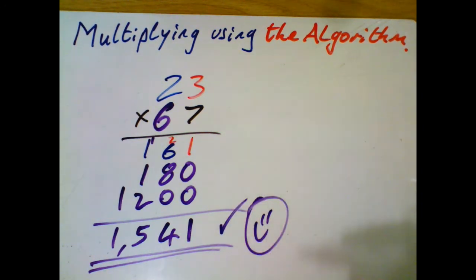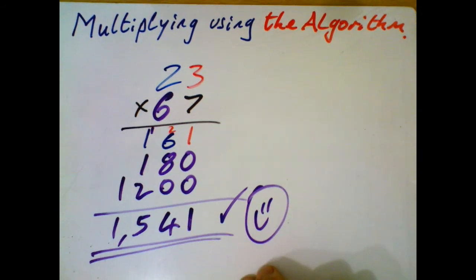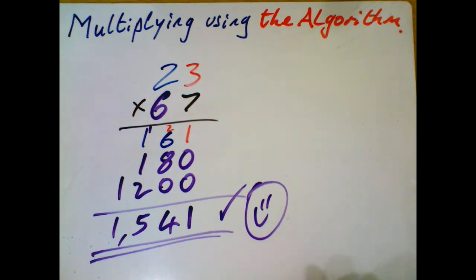So there you go. Let's have to use the algorithm to multiply a one-digit by two-digit and a one-digit by three-digit and a two-digit by two-digit. Okay. I hope that helps with your math today. Bye for now. Cheers.